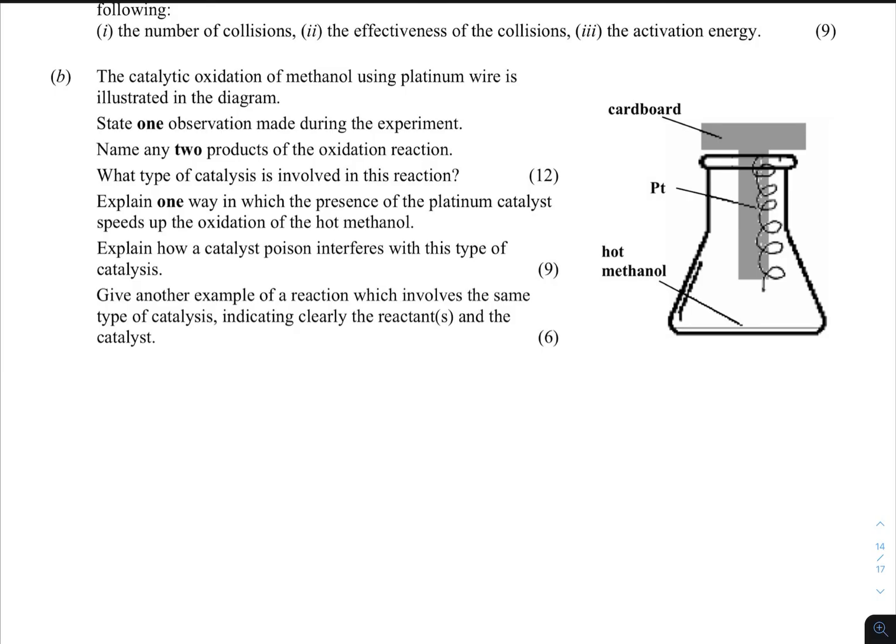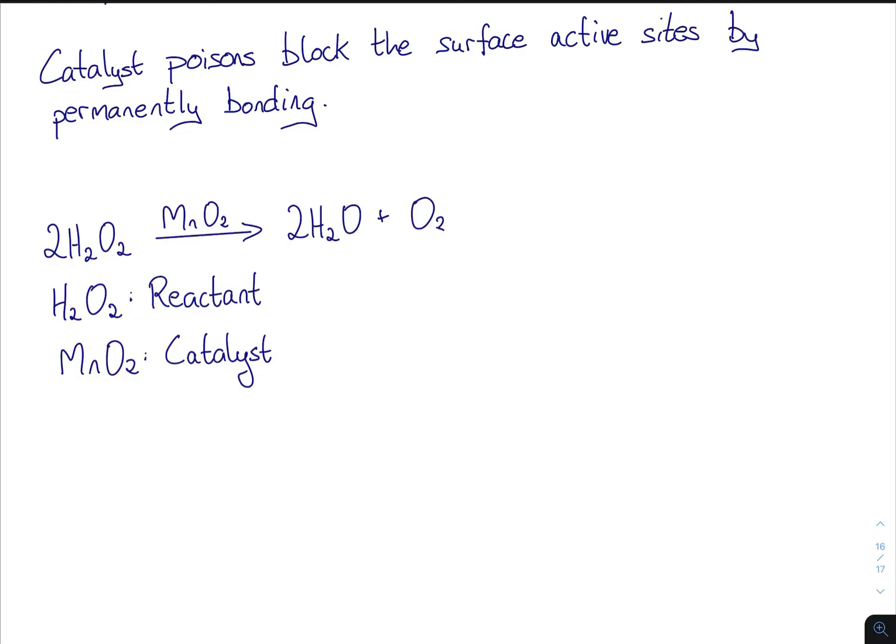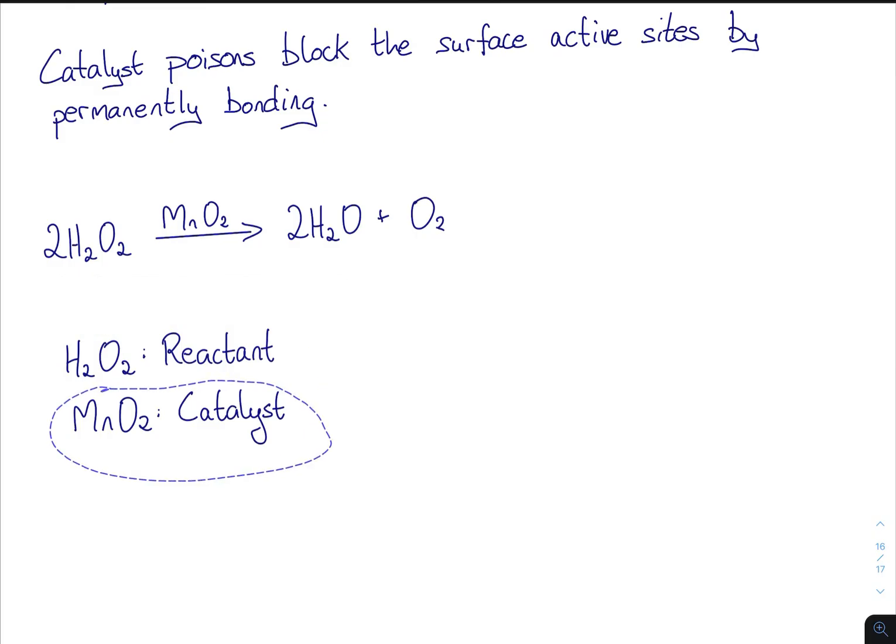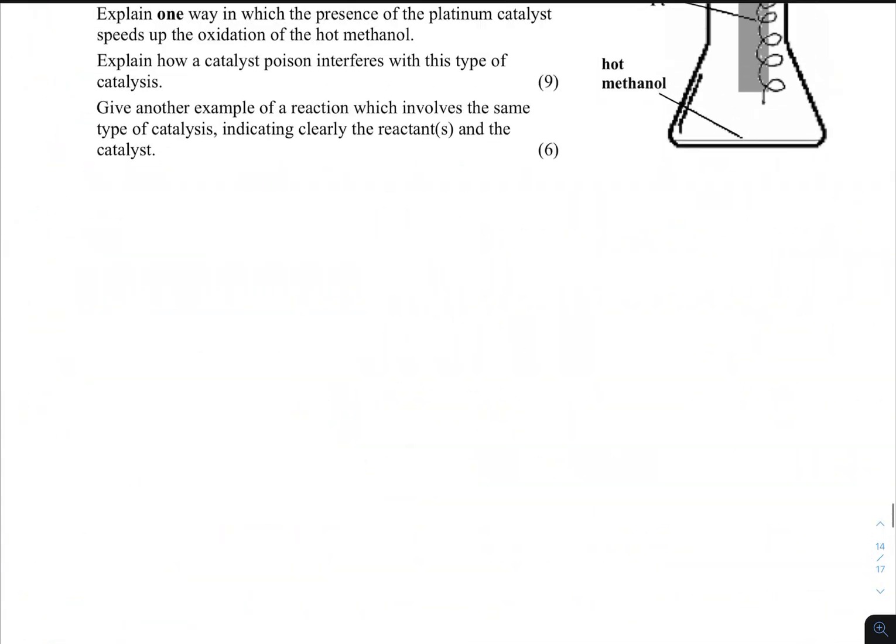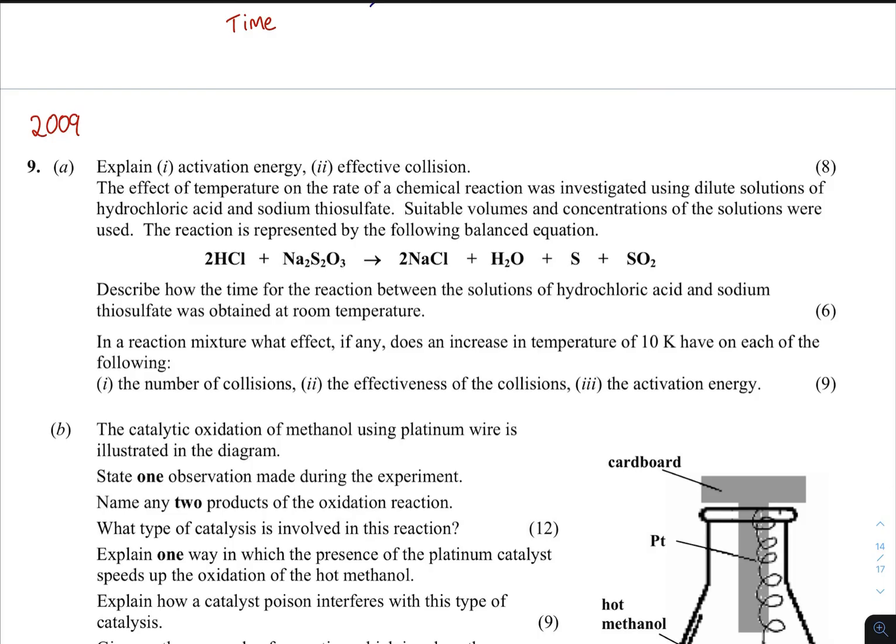Give another example of a reaction that involves the same type of catalysis - heterogeneous - indicating clearly the reactions and the catalyst. You would have done a mandatory experiment for this one: measuring the rate of oxygen production where you use manganese dioxide. This was your equation at the top there, which you do need to know. You then had to clearly state which was the catalyst and which was the reactant. The MnO2, which was black powder, was the catalyst, and the hydrogen peroxide H2O2 was the reactant. You would have noticed that at the very end of the reaction you still had your powder inside the liquid - in other words, it did not dissolve. Therefore it had to be hetero.